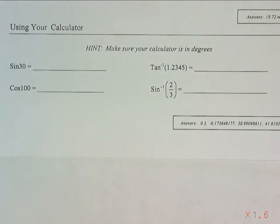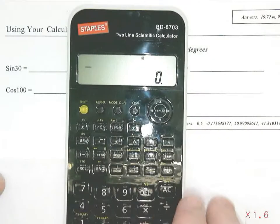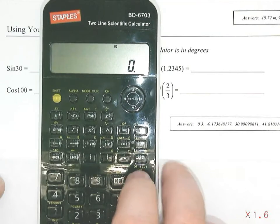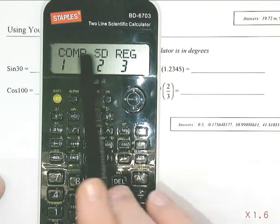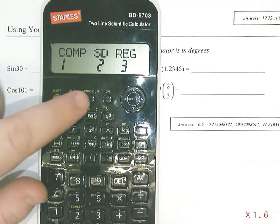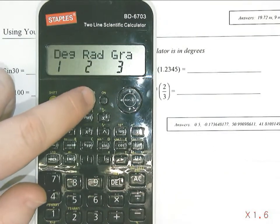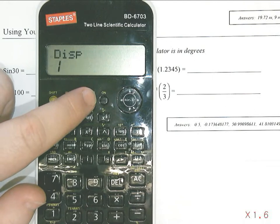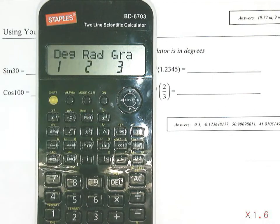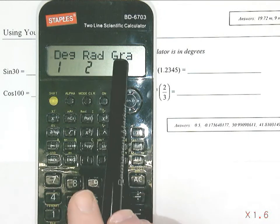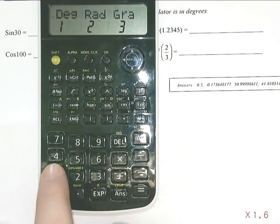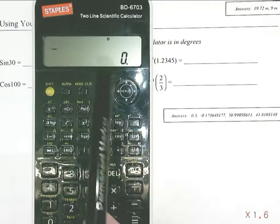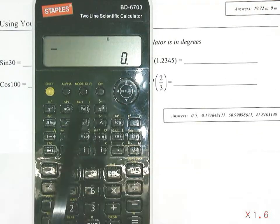This calculator also has a mode button, and when I press the mode button, it says comp, SD, and reg. But if I press the mode button again, you can continue pressing the button until you find what you want. So if I press the button twice, I have a choice of degrees, radians, and gradients. And since I want degrees, I would press one. And I should notice the little D show up to say that it's in degrees.